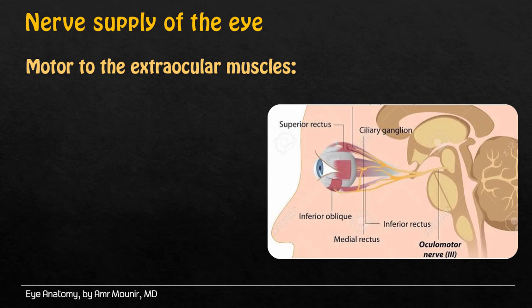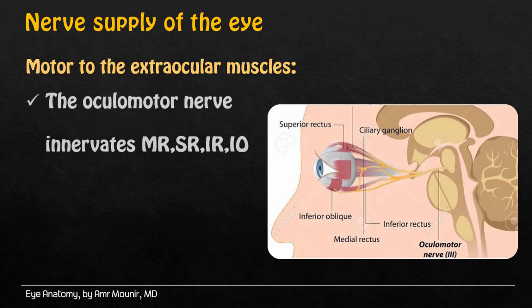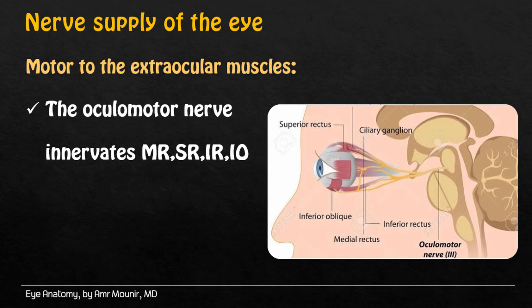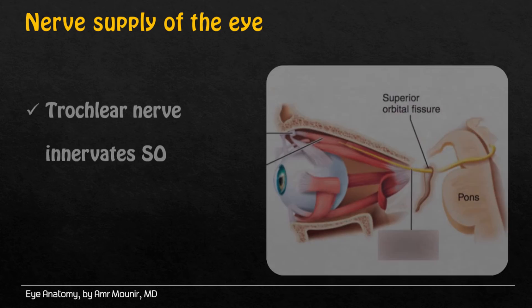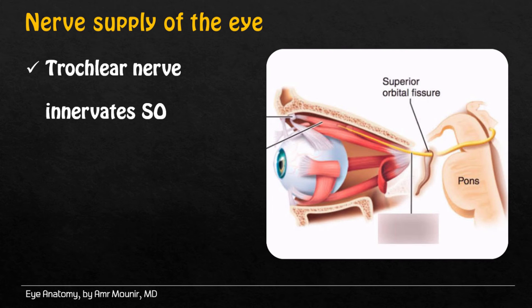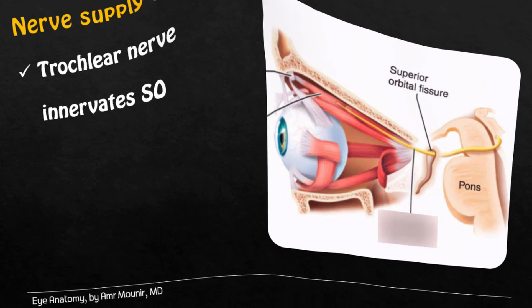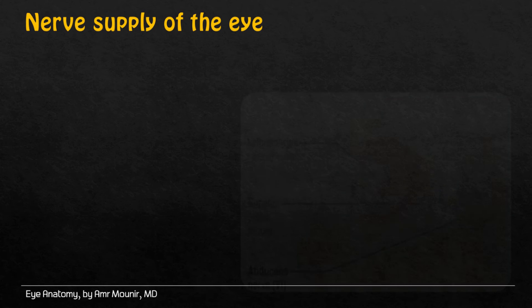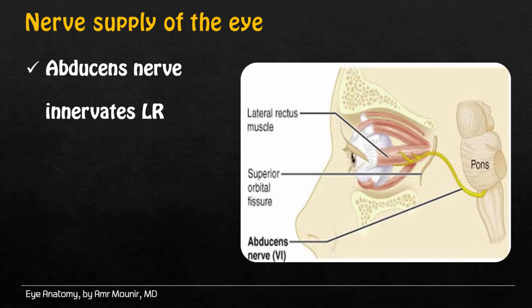Motor innervation to the ocular muscles: the ocular motor nerve innervates medial rectus, superior rectus, inferior rectus, and inferior oblique. Torcular nerve innervates medial rectus muscle. Abducens nerve innervates the lateral rectus muscle.